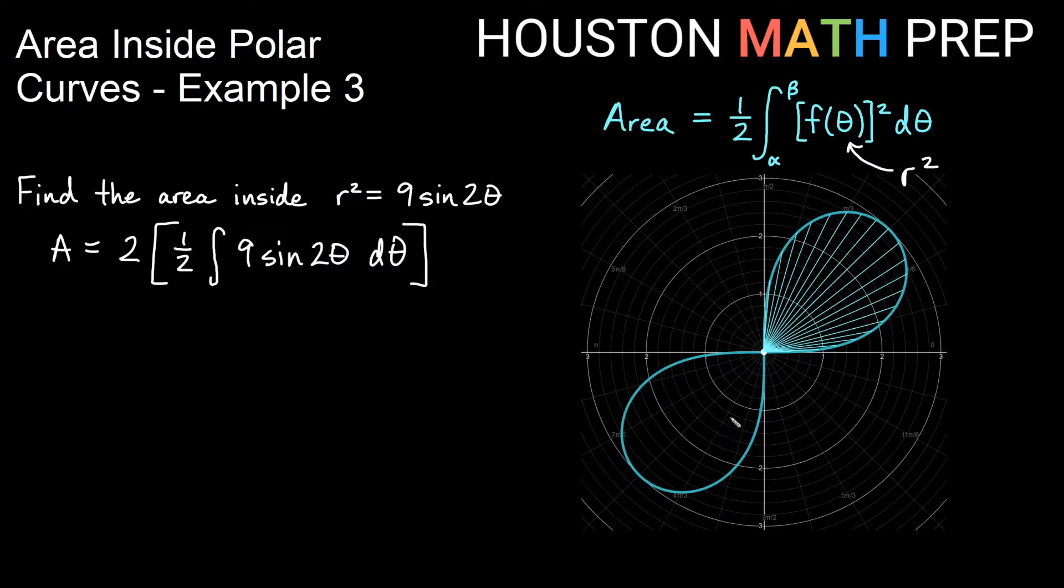Now we need to figure out our α and β. I'm starting at the pole, going around the curve and coming back to the pole. So α and β are both at the pole. Obviously if it's at the pole, that's when r = 0.